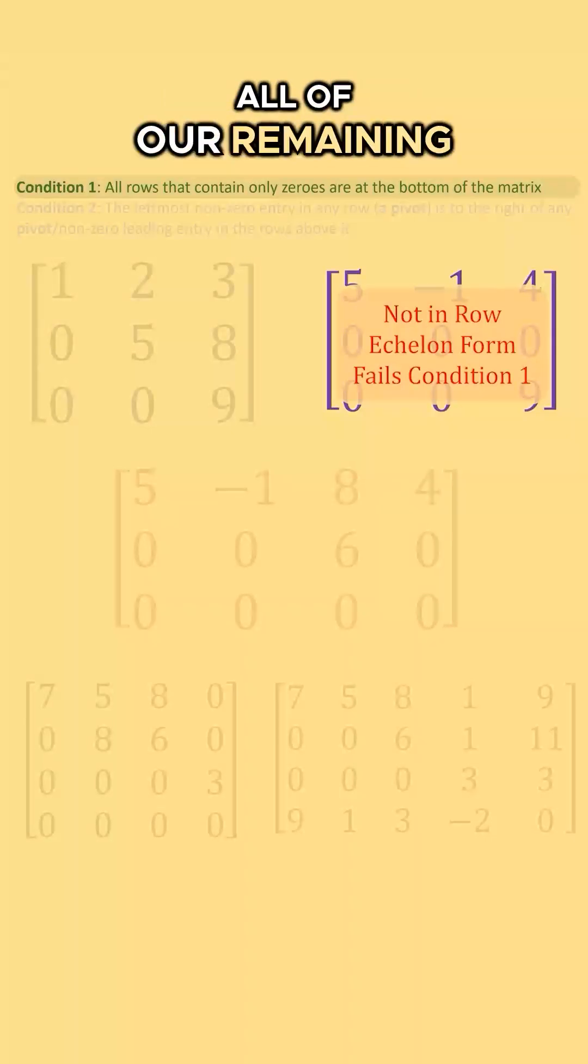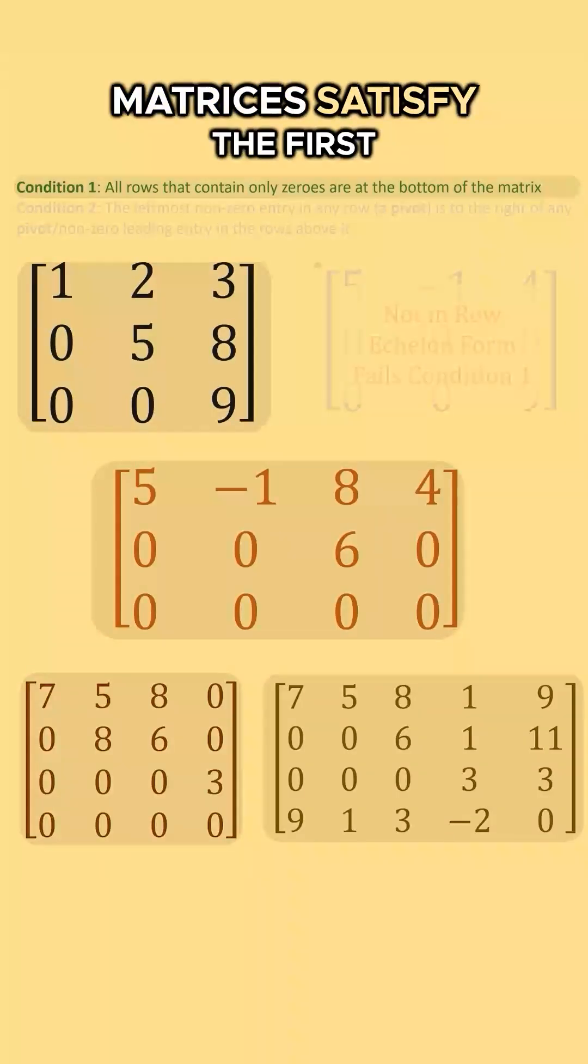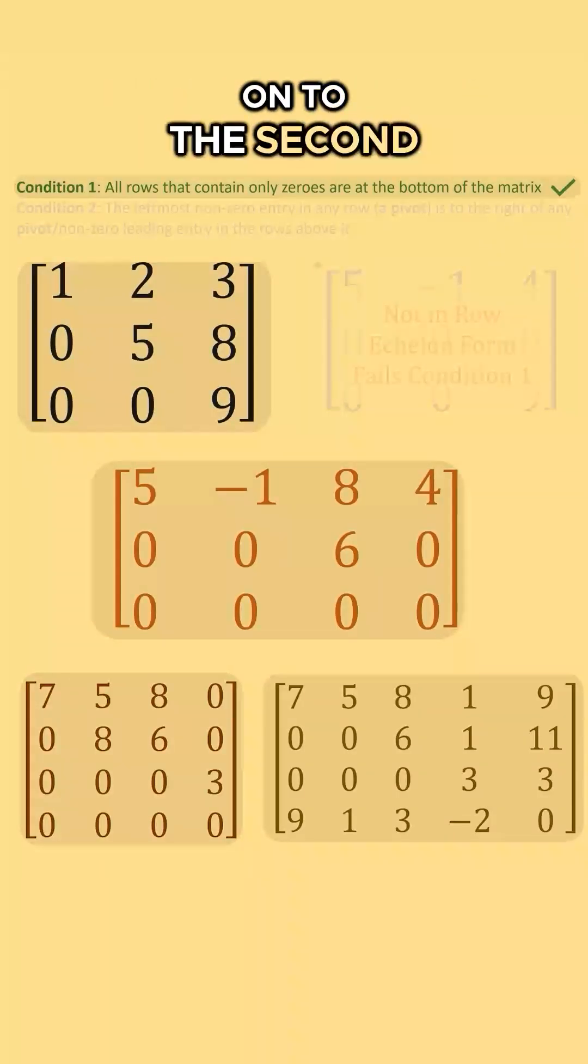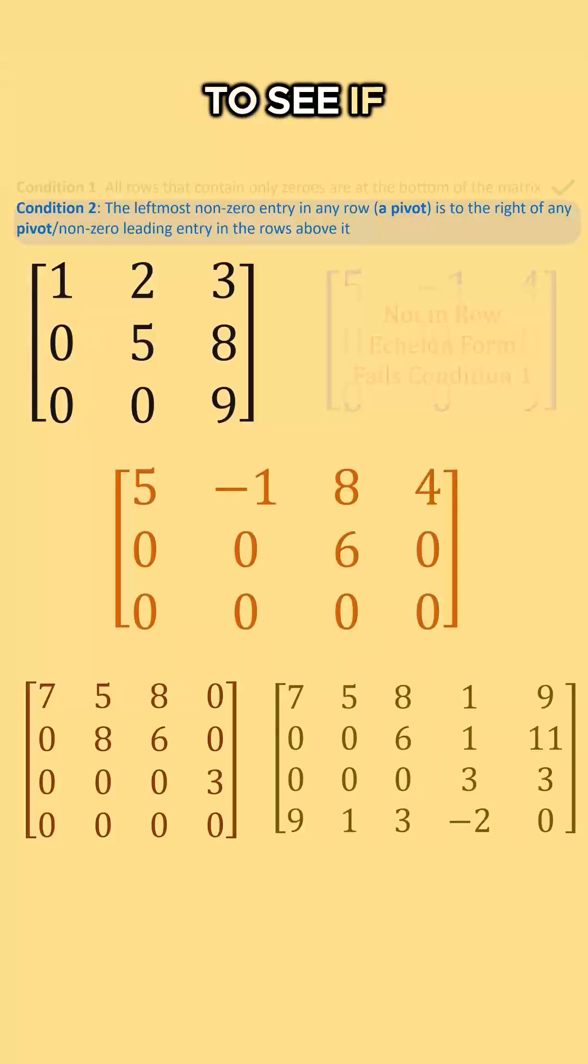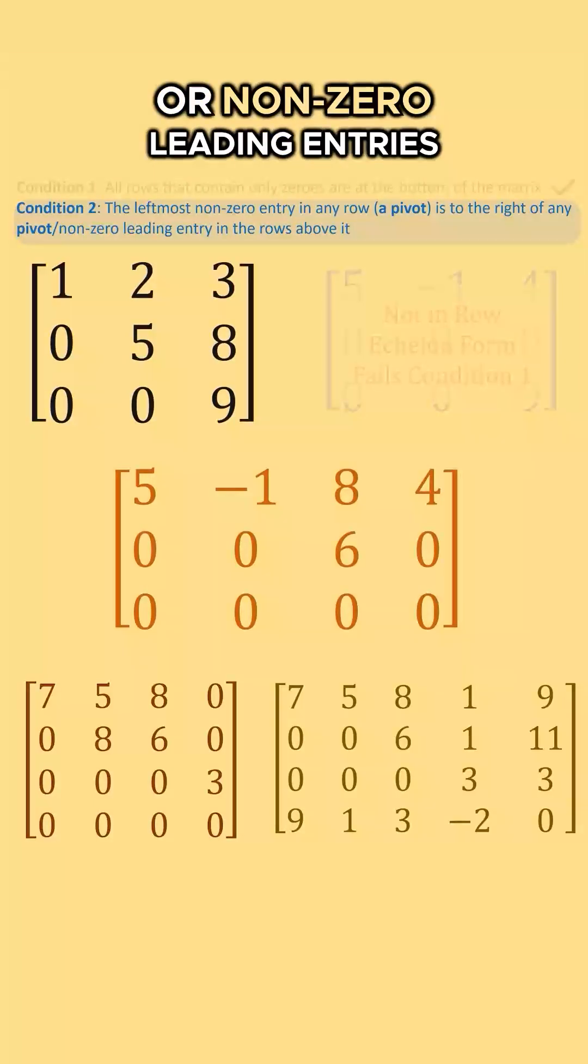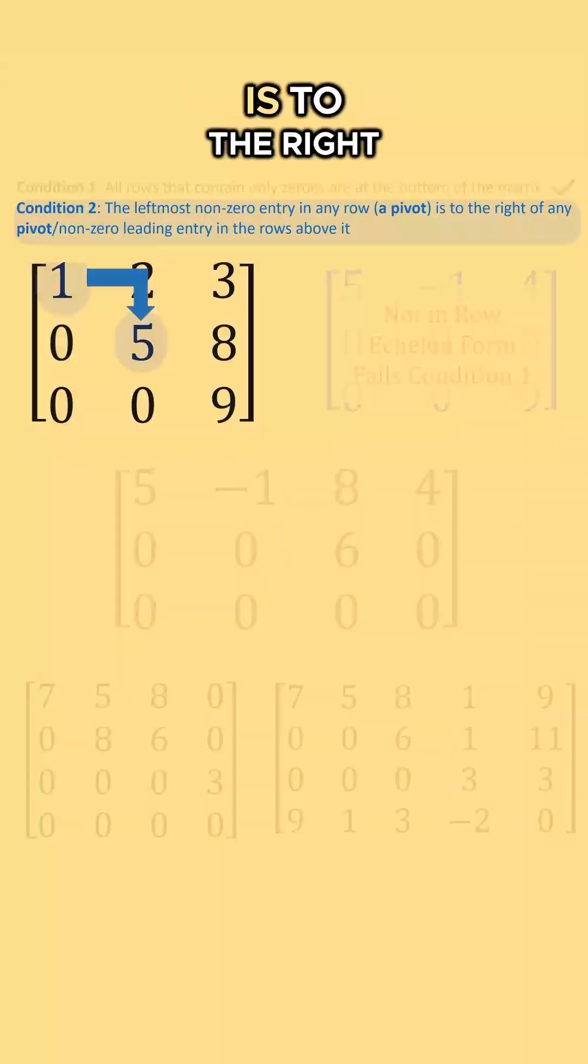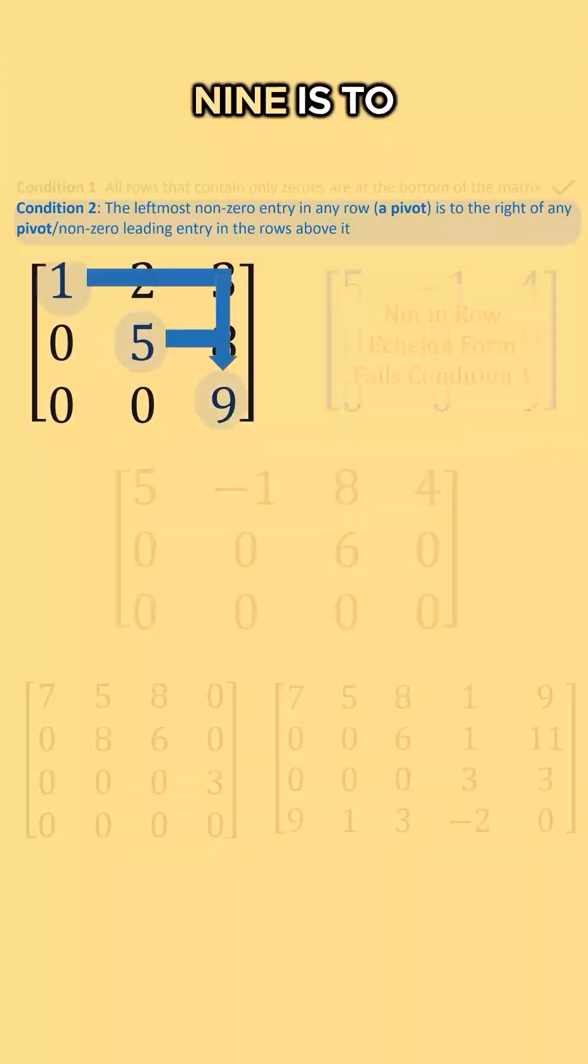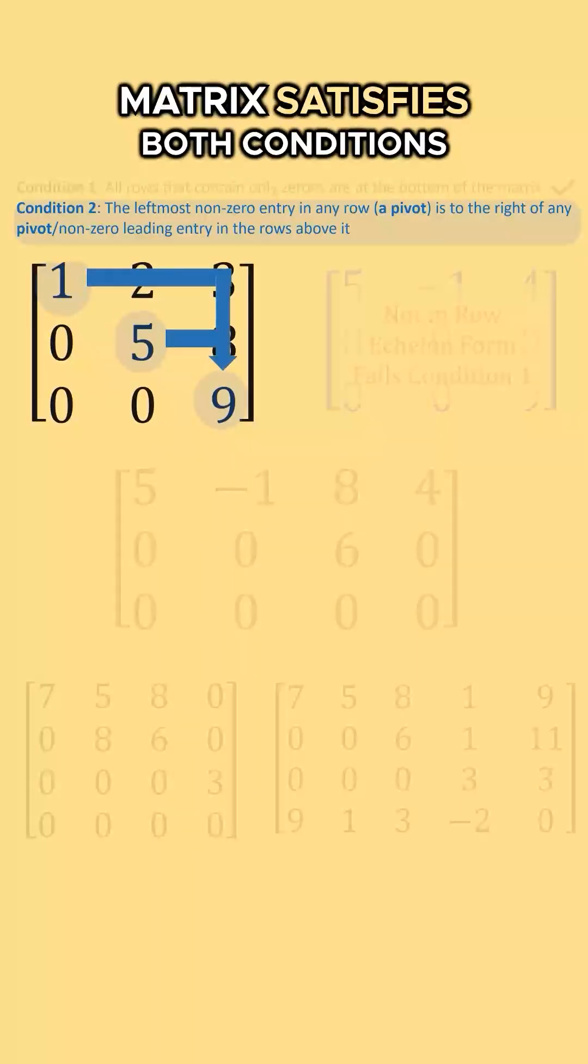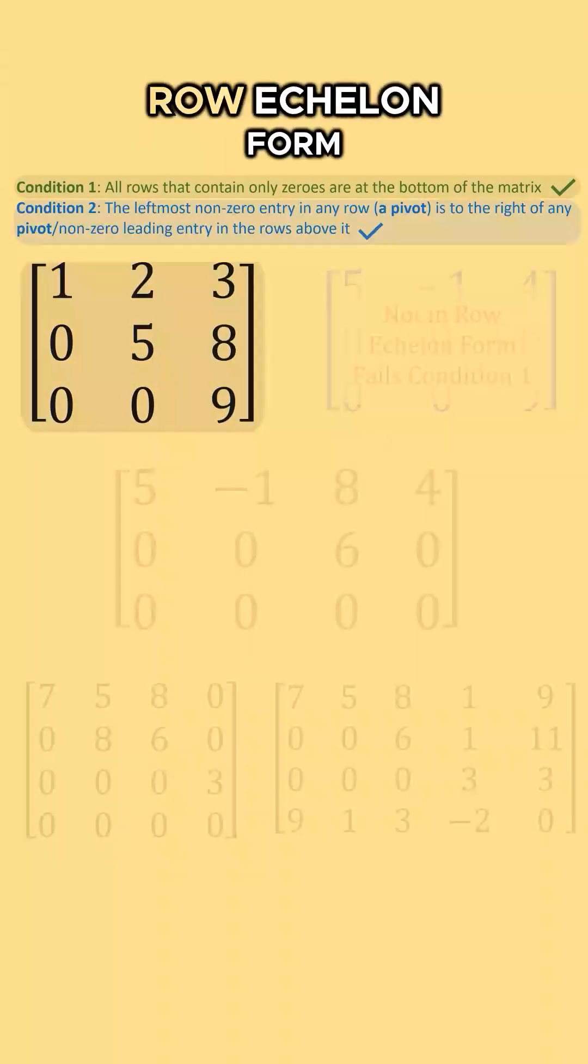All of our remaining matrices satisfy the first condition, so let's move on to the second condition. Now we look to see if our pivots or non-zero leading entries are to the right of all pivots or non-zero leading entries above them. In the top left matrix, our five is to the right of one, our nine is to the right of one and five, and so this first matrix satisfies both conditions and is in row echelon form.